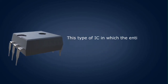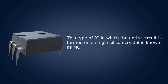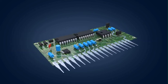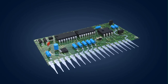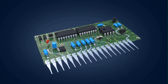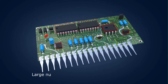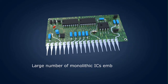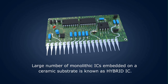This type of IC, in which the entire circuit is formed on a single silicon crystal, is called a monolithic IC. These are the most widely used ICs. A large number of monolithic ICs embedded on a ceramic substrate is known as a hybrid IC.